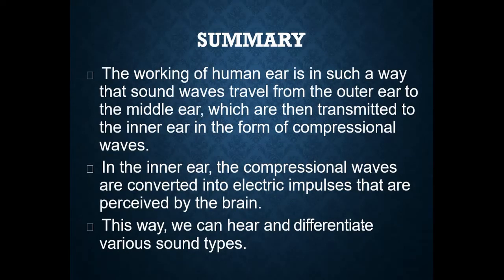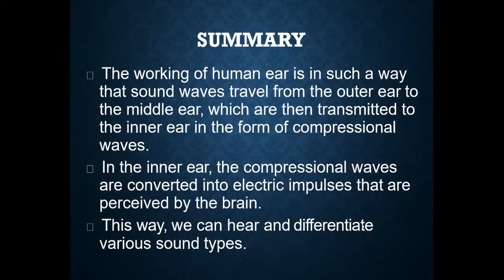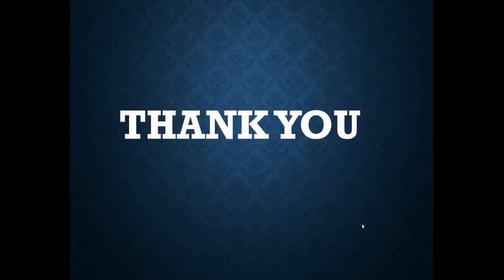To summarize, sound waves travel from the outer ear to the middle ear, then are transmitted to the inner ear in the form of compressional waves. When these compressional waves reach the inner ear, they get converted into electrical impulses, which are then carried to the brain through the auditory nerve. That is how we can hear various types of sounds.